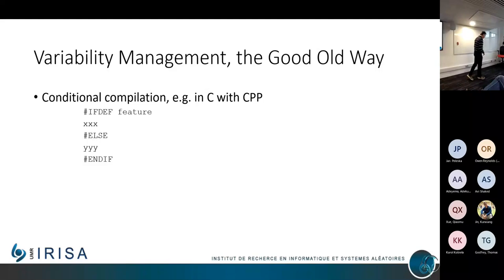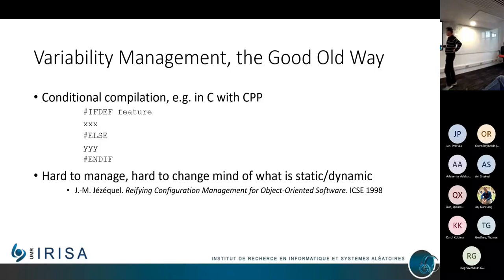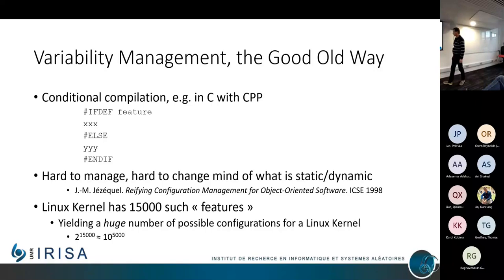Variability management the old way — we have been doing that forever. For instance, using C, there was the technique of using ifdef and that kind of stuff, where there is the CPP preprocessor defining that if a particular feature is selected, then this block of code should be compiled, otherwise another block. There is a big issue with something like that because it is hard to manage. For instance, it is impossible to change your mind on whether you want to do that at compile time or at runtime. If you want to do it at runtime, you have to syntactically change your program, and you need new mechanisms for doing that.